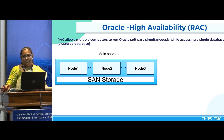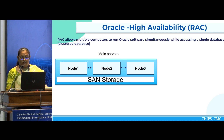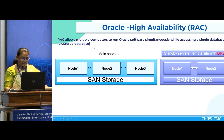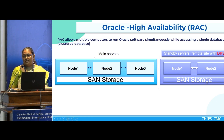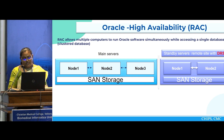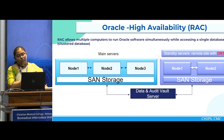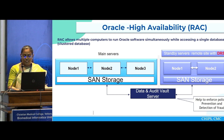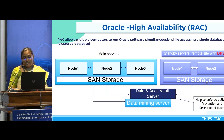This is our Oracle high availability model, which works on Real Application Cluster. We have a three-node RAC that talks to the SAN storage, and it is synchronized with a standby DR, which is a two-node RAC with SAN storage. If any one node is down, the other two can take over and services remain uninterrupted. If all three nodes are down, the separate DR takes over immediately. We also have a data and audit vault on both servers, which helps enforce policy and prevention and detection of fraud. We have a separate data mining server for research purposes, and we also have remote backups.